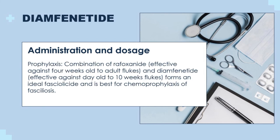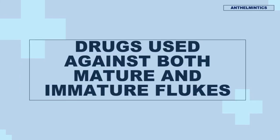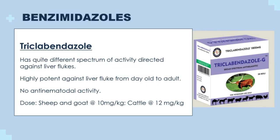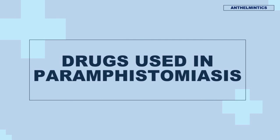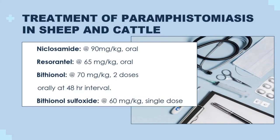For prophylaxis, the best fasciolicide for chemoprophylaxis of fasciolosis is a combination of rafoxanide and diamphenatide. Drugs used against both mature and immature flukes: triclabendazole is the only treatment option. Its activity against liver flukes is quite distinct from others. For treatment of liver flukes, Fasciola hepatica, from juveniles to adults, it is extremely effective. However, it lacks antinematodal properties. Dose: in cattle, 12 mg per kg; in sheep and goats, 10 mg per kg. There are also drugs used in paramphistomiasis, which include niclosamide, resorantel, bithionol, and bithionol sulfoxide.